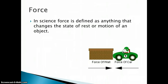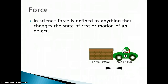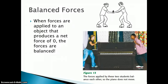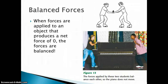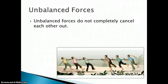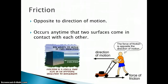The last part of this chapter talks about force. Force is pretty much anything that changes the state of rest or motion of an object. We have the force of the wall and the force of the car coming together — probably not a really good thing to do. We can have balanced forces or unbalanced forces. Balanced forces means they cancel each other out, like when you're pushing against your friend on ice skates. If one of you presses harder than the other, you become unbalanced and they don't completely cancel out — kind of like tug of war, where you want an unbalanced force because you want to win.